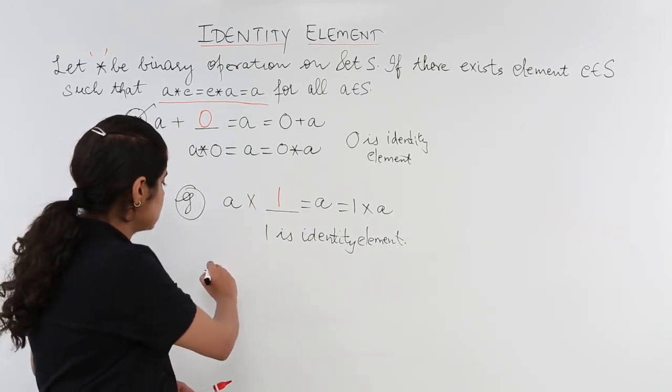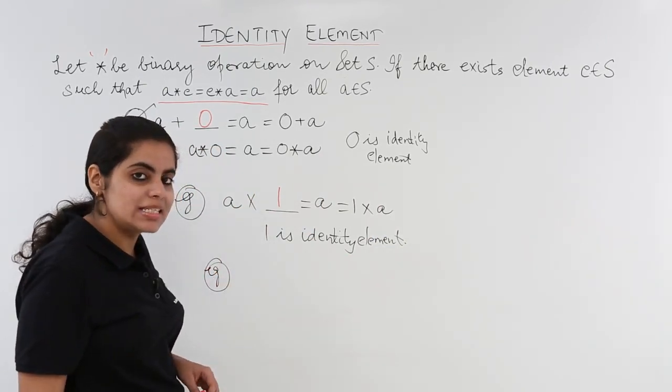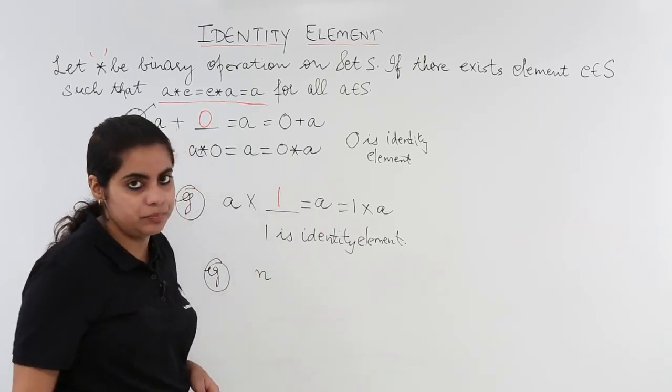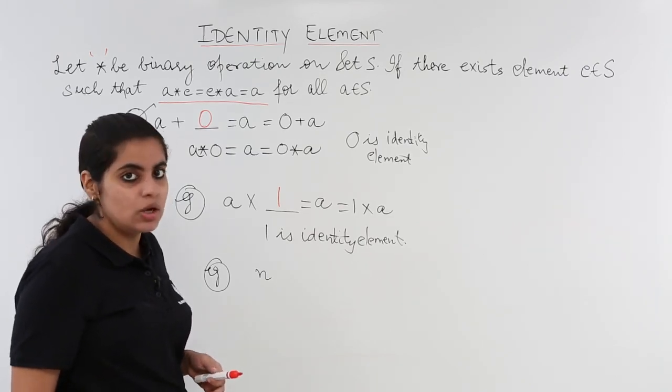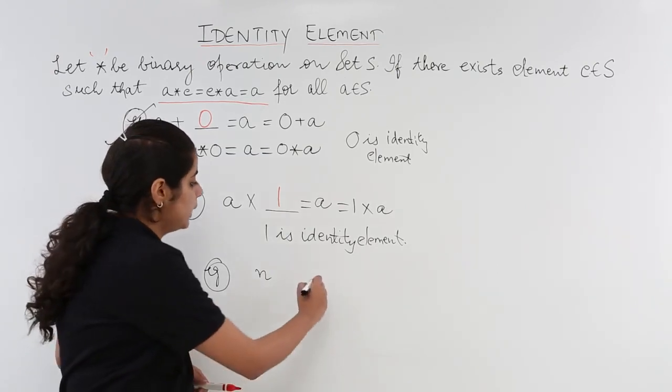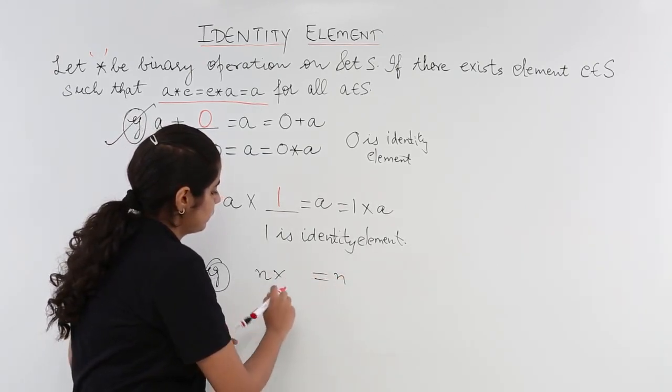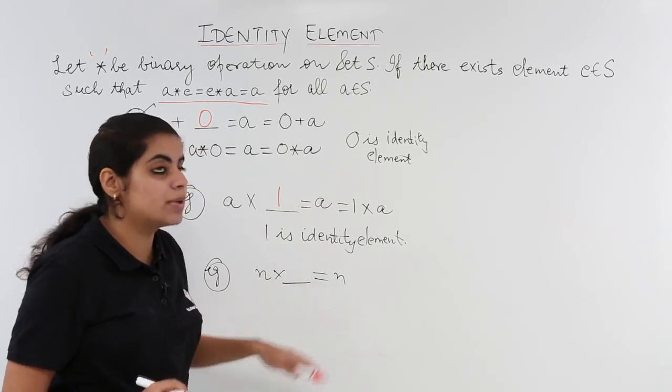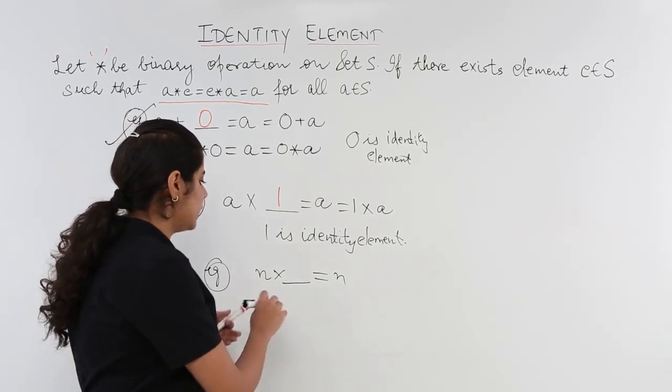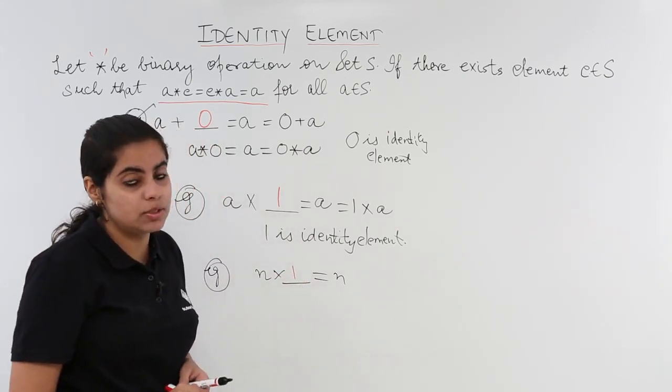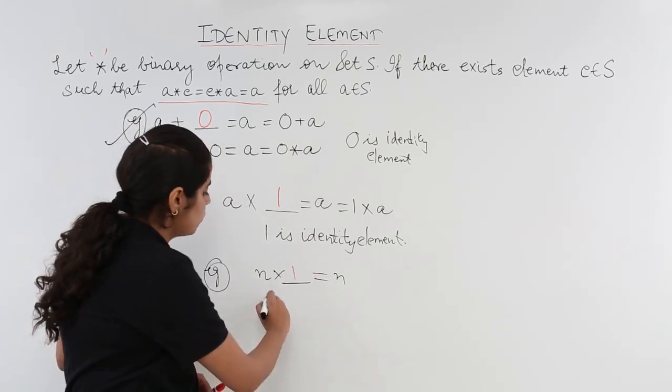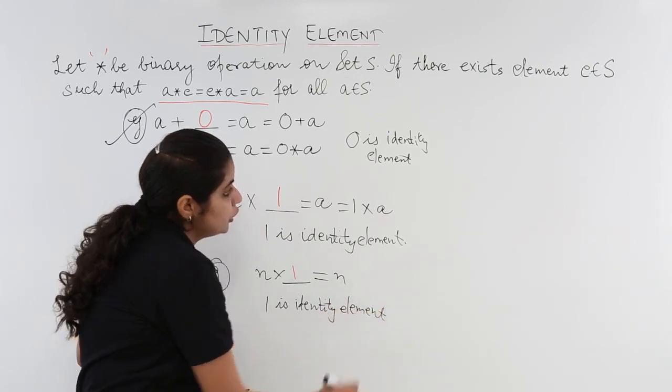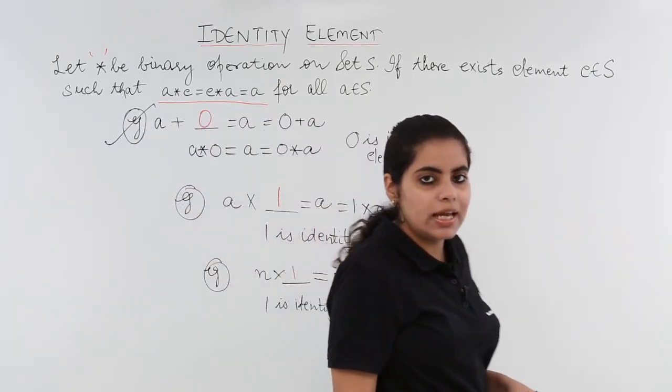What about the third example? The third example says I don't have a or 1 or 2, rather I have a natural number n. Now what must be multiplied with this natural number to obtain n again? What must be multiplied with n to obtain n? And the category is for sure of natural numbers because it is written as n. So 1 can be multiplied, so the answer is 1. 1 is the identity element because 1 belongs to the natural numbers, so 1 is identity element.